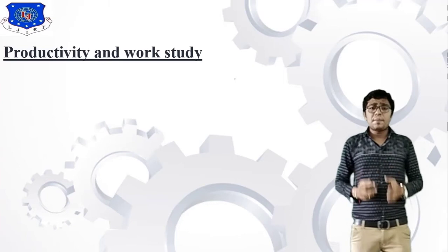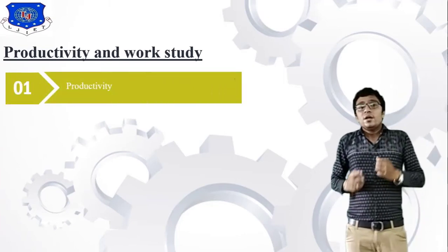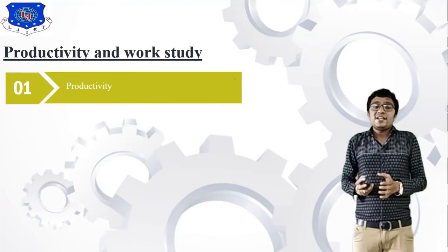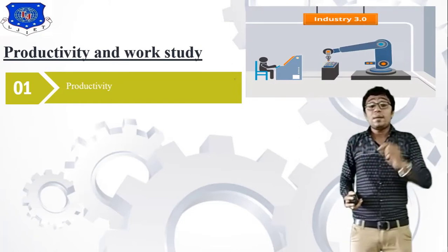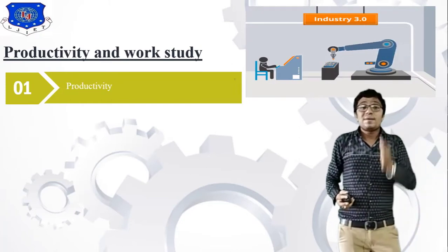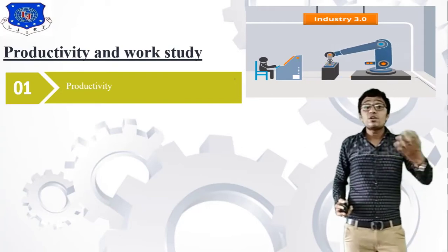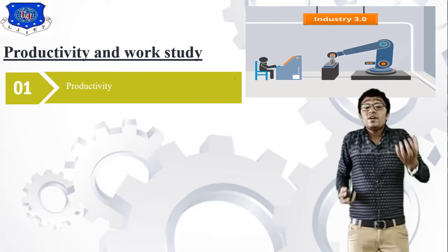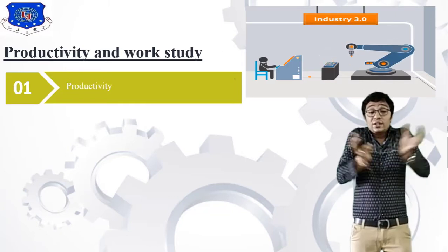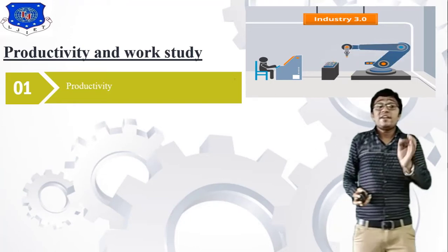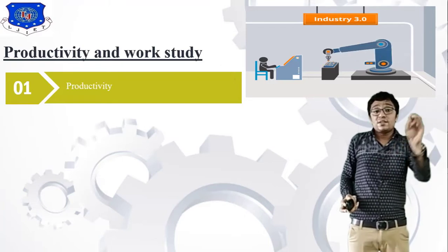The third chapter is Productivity and Work Study. Productivity is output divided by input. What types of inputs are there? Productivity depends on materials input, machine input, and manpower input. The productivity of your inputs depends on all of these factors.